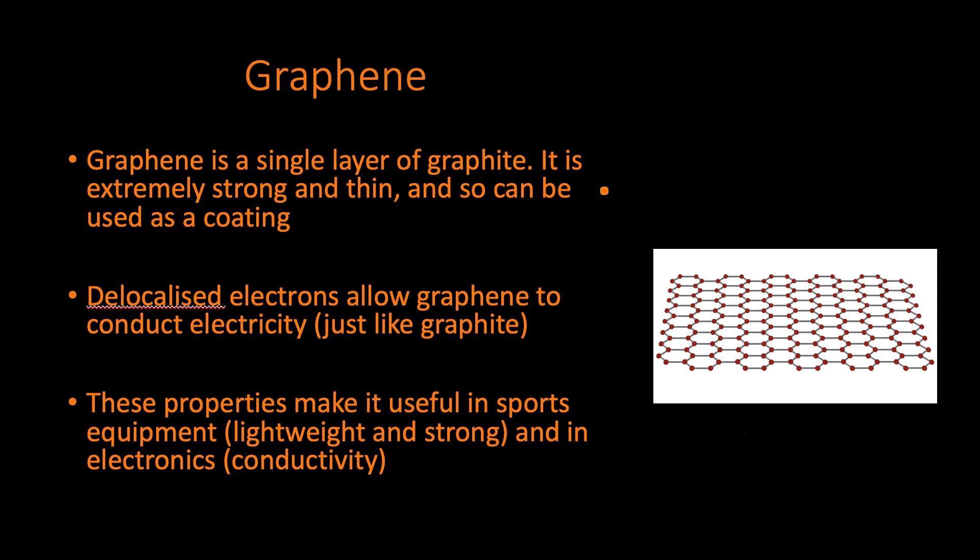Here is a diagram of graphene. It looks exactly like your diagrams of graphite except there's only one layer—there aren't multiple layers.